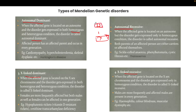Autosomal recessive disorder is also linked with the 22 pairs of autosome chromosomes, but it is only expressed when the condition is homozygous recessive. Only if the offspring has a homozygous recessive gene will the disorder occur. Both parents of an affected person are either carriers or affected themselves.